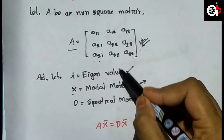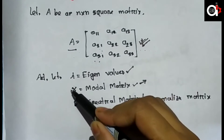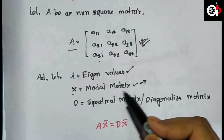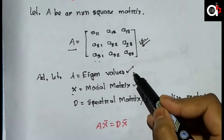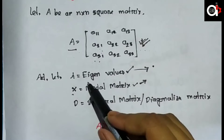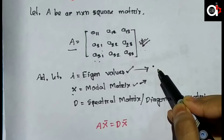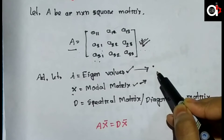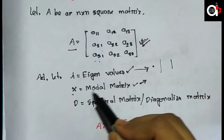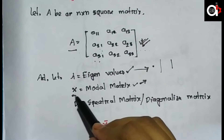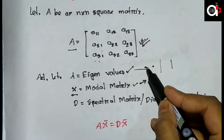Lambda is the matrix of eigenvalues, and X is our modal matrix. The modal matrix is formed using the eigenvectors. The eigenvector is the most important part — this matrix is the modal matrix.